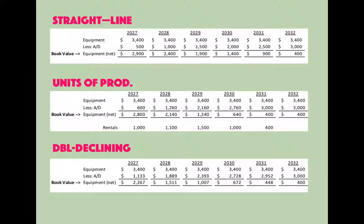By 2032 all three methods get us to a book value of $400 — the residual value — but they don't get there in the same way. These methods are not trying to determine what the asset is worth to outside people; they are simply different ways to allocate the $3,400 cost across time.